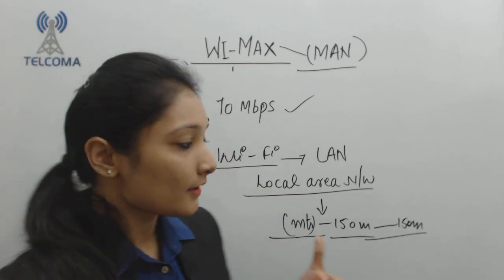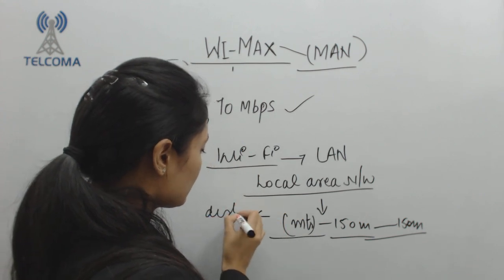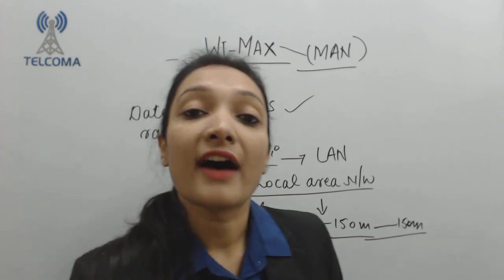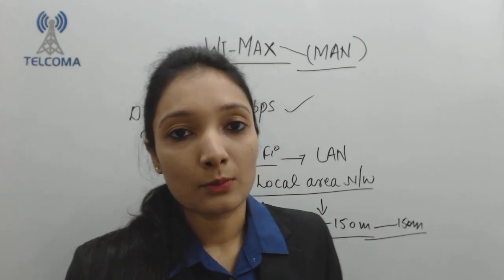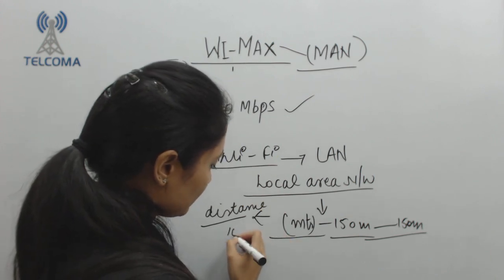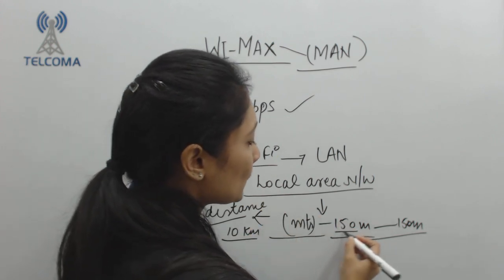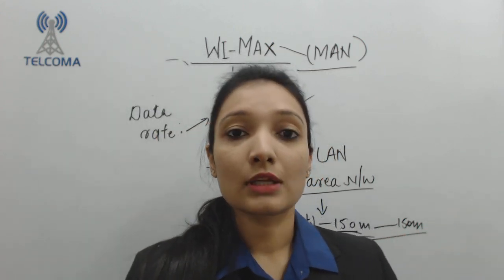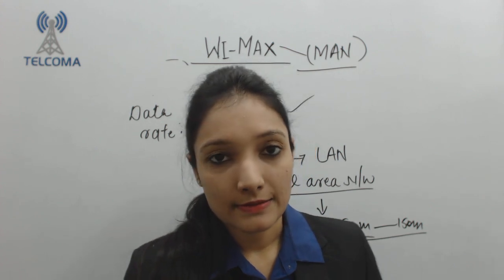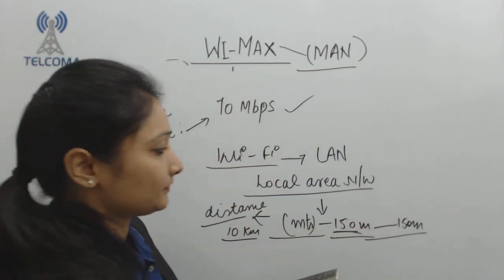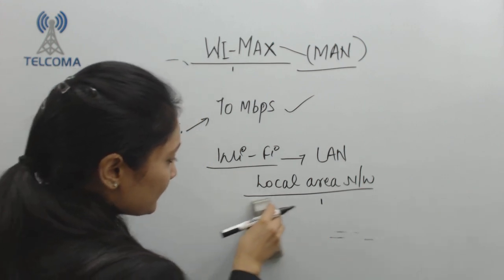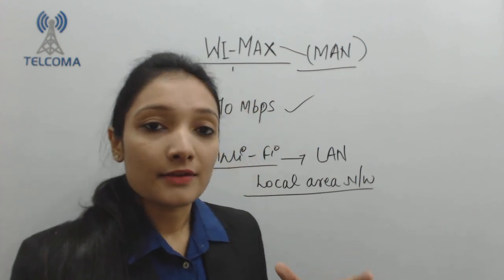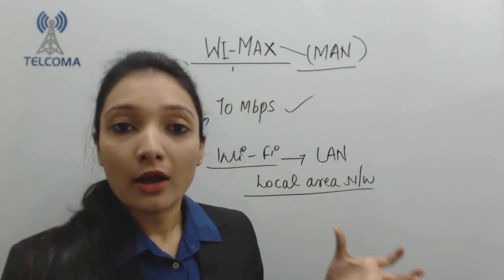The main difference between WiMAX and Wi-Fi is distance. WiMAX can cover an area up to certain kilometers — for example, 10 kilometers — while Wi-Fi is restricted to 150 meters. The basic difference between these two technologies is distance. WiMAX is designed to provide data services to customers and enterprises in an economical manner.